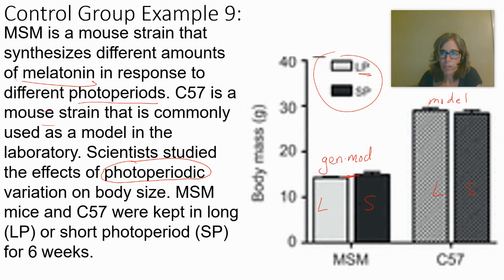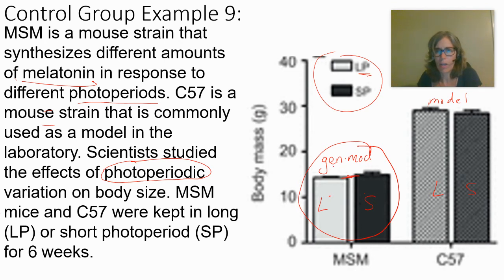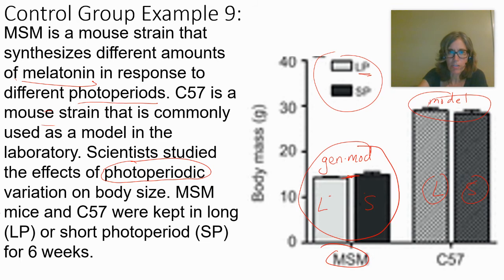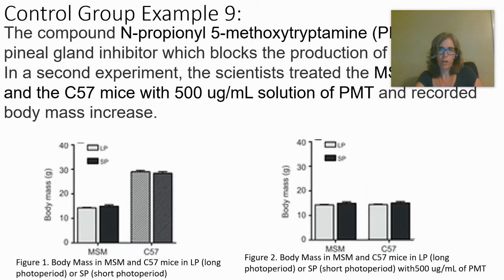For the C57 model mice, there's also no difference between long and short photoperiod, but there is a clear difference in body mass between C57 and MSM mice overall.